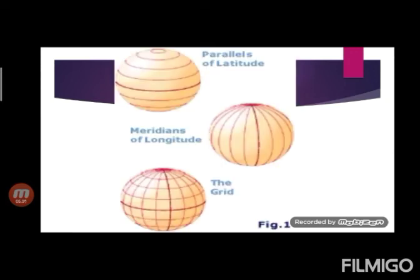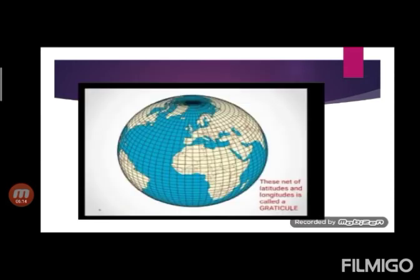Now let's move to our last topic, the graticule. The parallels of latitudes and meridians of longitude form a net which is called as a grid. This grid is actually graticule. These nets of latitudes and longitude is called as graticule. This facilitates, determines the location of a place anywhere on the earth.